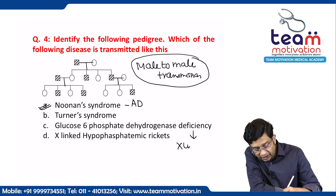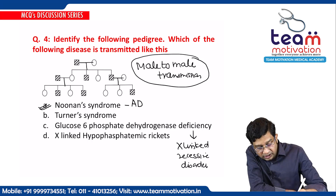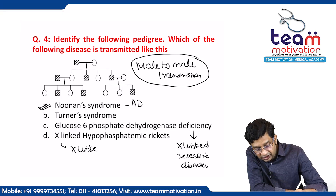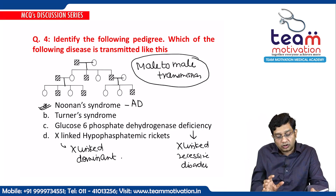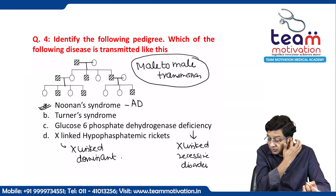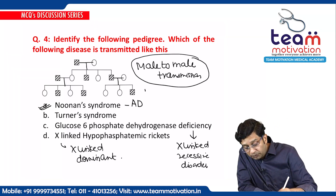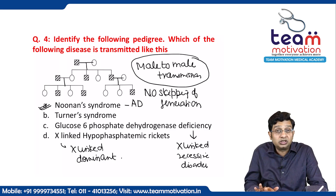G6PD is an X-linked recessive disorder. X-linked hypophosphatemia is an X-linked dominant condition. So out of the options, see the pedigree carefully. Also, there is no skipping of generation — all generations are affected. Both features — male-to-male transmission and no generation skipping — favor autosomal dominant. Therefore, the answer is Noonan syndrome.